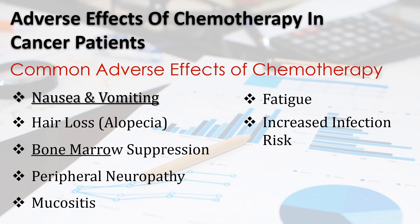Chemotherapy also suppresses the bone marrow, which means reduced red cells, white cells, and platelets. This can lead to anemia, infections, and bleeding issues. Regular blood monitoring is essential. Mucositis is the painful inflammation of the mouth and gut lining — it makes eating difficult and increases infection risk. Proper oral care is a must here.